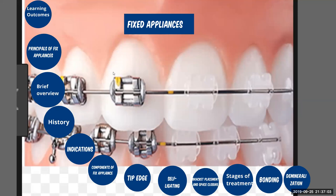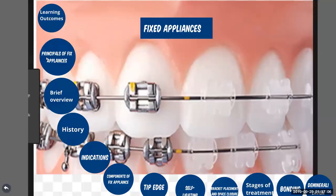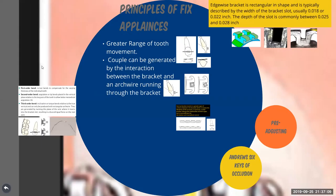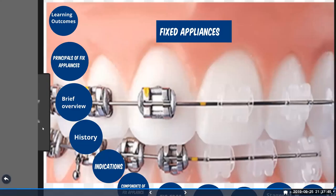Fixed appliances are those that are fixed to the teeth and cannot be removed by the patient. Removable appliances, by contrast, can be removed by the patient. Fixed appliances are attached to the tooth either with chemical bonding or micro-mechanical retention. The benefit of fixed appliances is that they provide a greater range of movement compared to removable appliances.